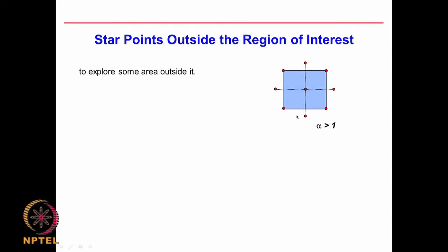Suppose we have a 2^2 system, that is 2 factors only. You have 4 experiments at the corners — those are the factorial points — then one experiment in the center, and then you pick up 4 experiments outside this square. This distance we call alpha. If alpha is equal to 1 it will be lying exactly at the edges, like your plus 1, 0, minus 1 type of experiment. In the alpha case we are having plus 1, 0, minus 1, and in addition we have plus alpha and minus alpha for each of the parameters.